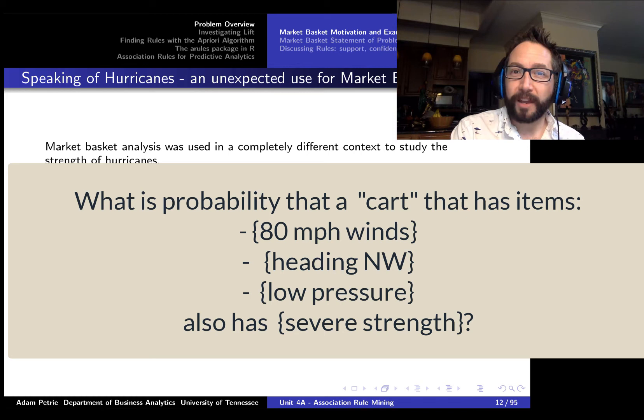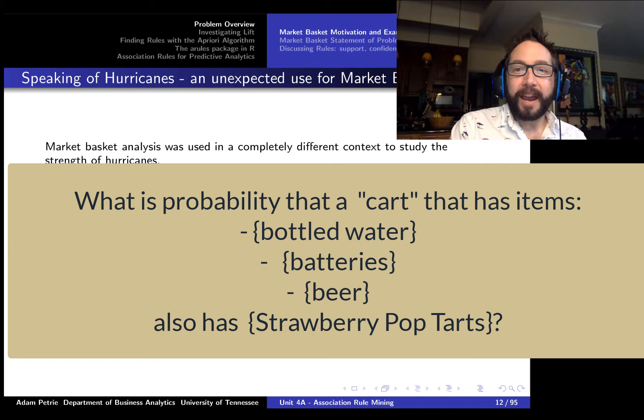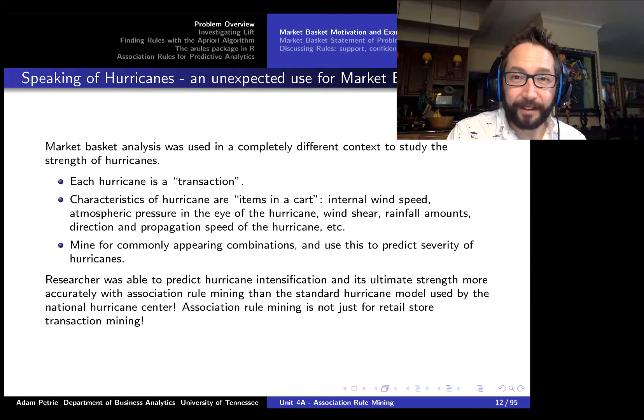And then what they did is they looked to see, well, what combinations of characteristics tended to appear together and what combinations were associated with a particularly severe hurricane. Kind of like if we see bottled water, batteries and beer, what else might be in the cart? Strawberry pop tarts. And by doing this sort of analytics, by looking to see what combinations were associated with a particularly severe hurricane, this person that was developing this strategy actually came up with a better hurricane forecasting model than what was available at the time. They were able to predict hurricane intensification and its ultimate strength better than anything else that existed.